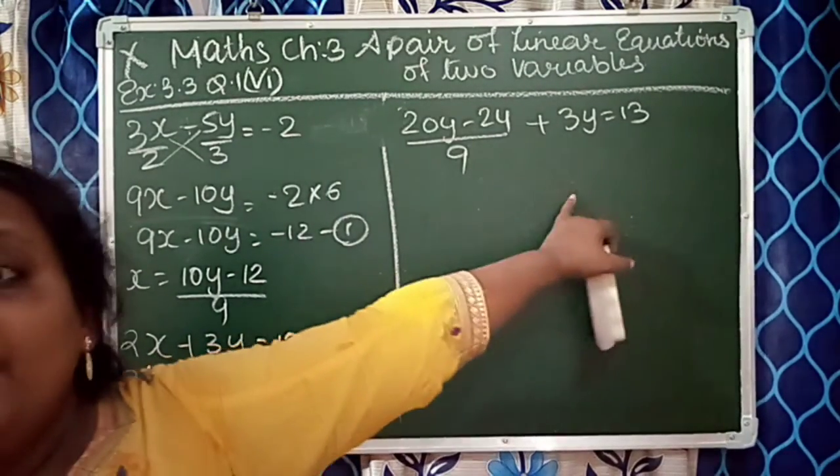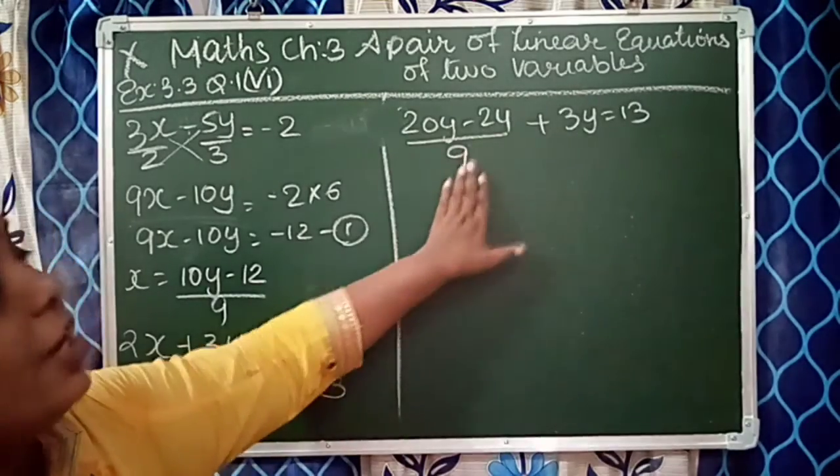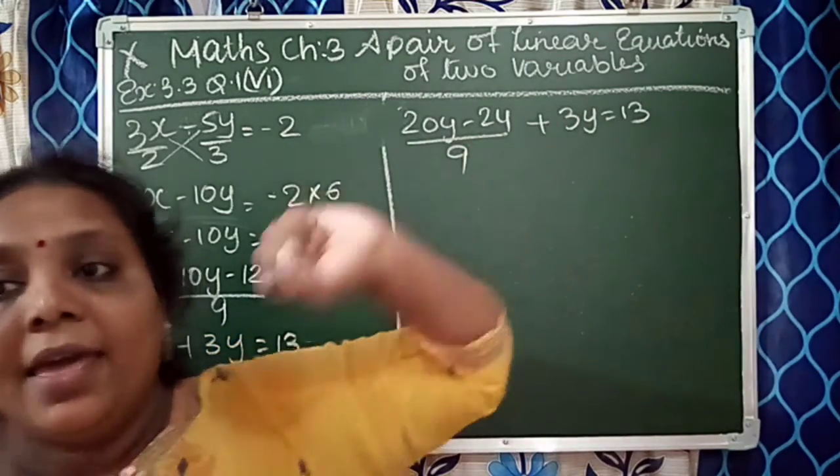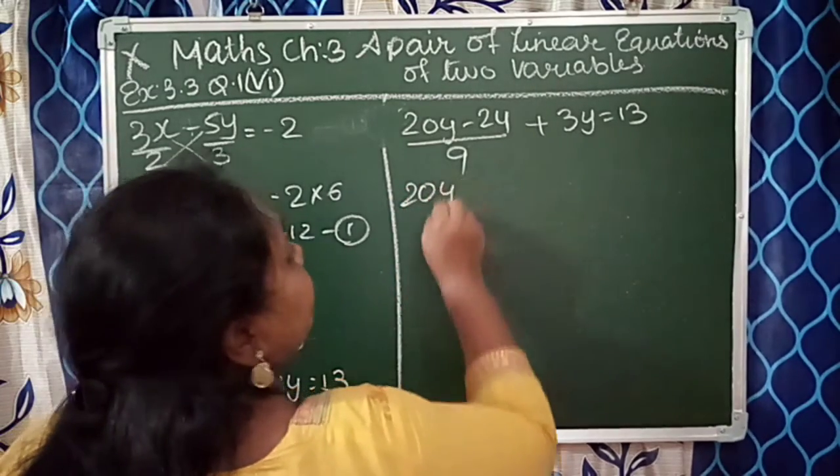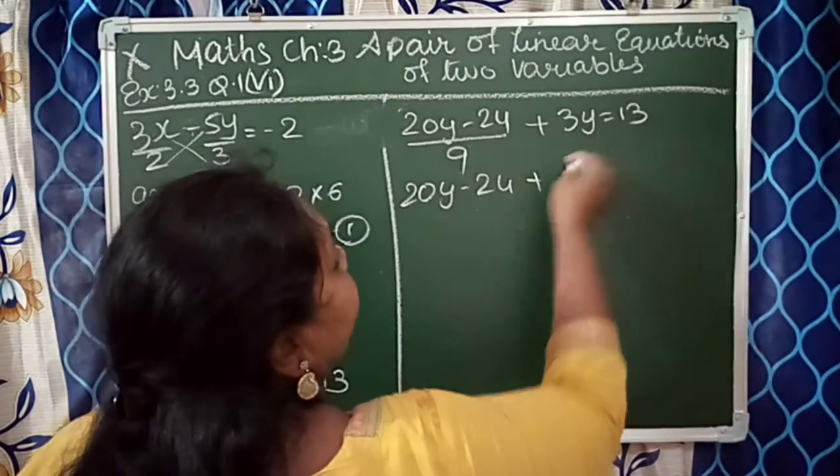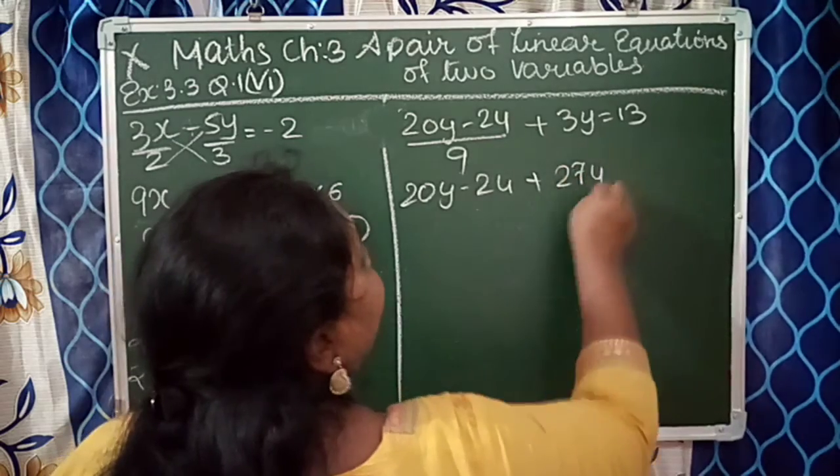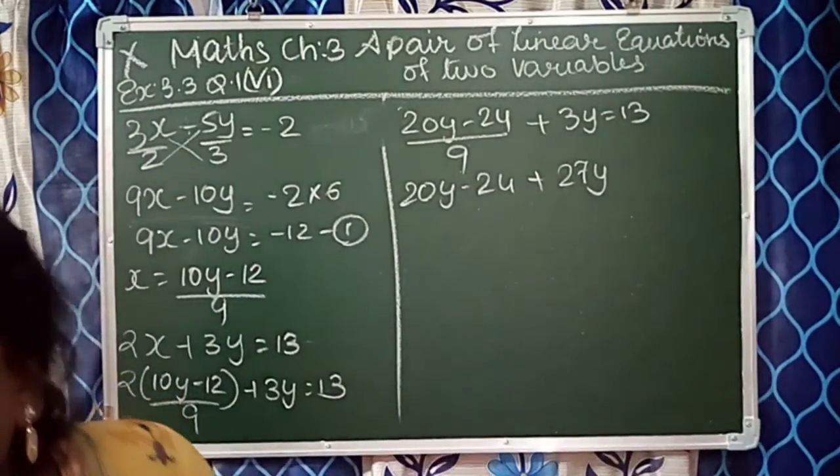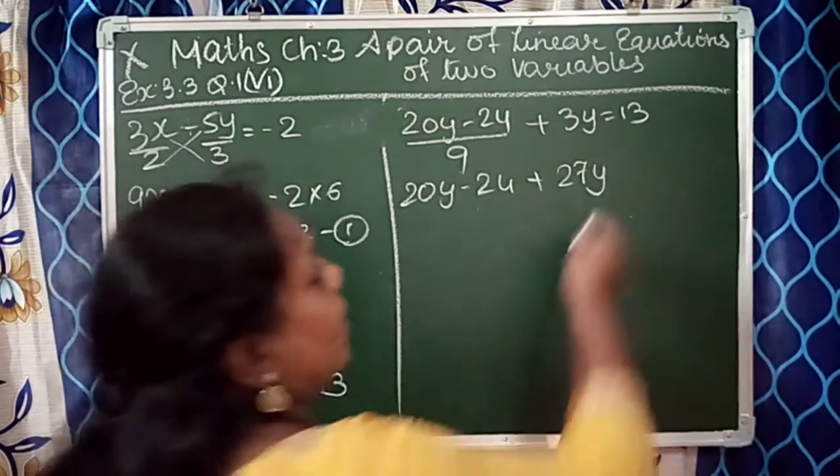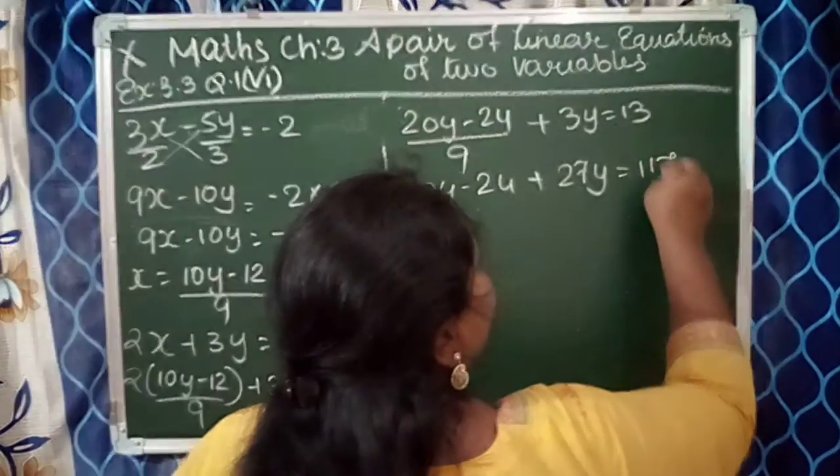We'll take the 9 to both sides as common. 20y minus 24 plus 9 times 3y, that is 27y. And 13 times 9 is 117, is equal to 117.